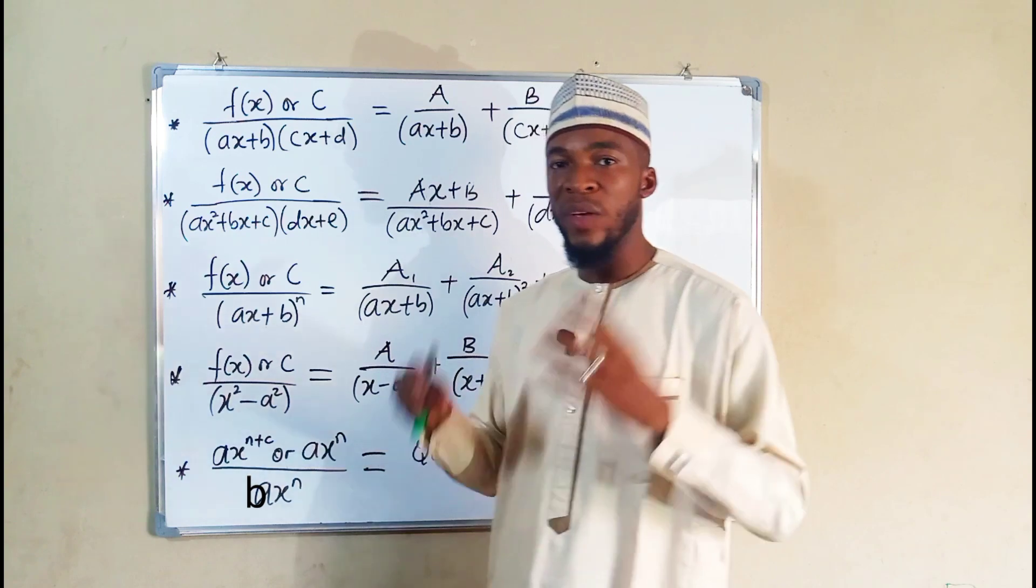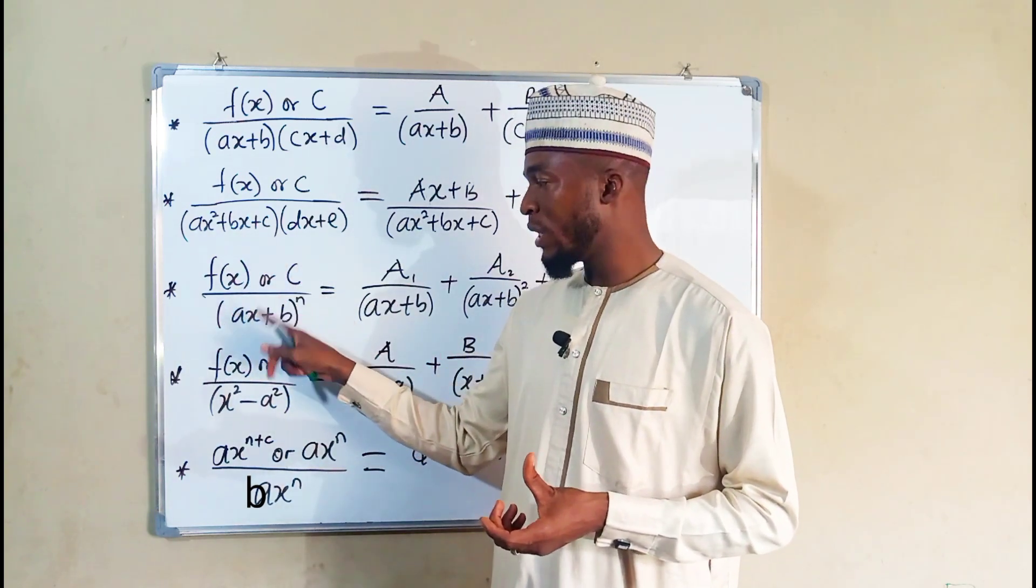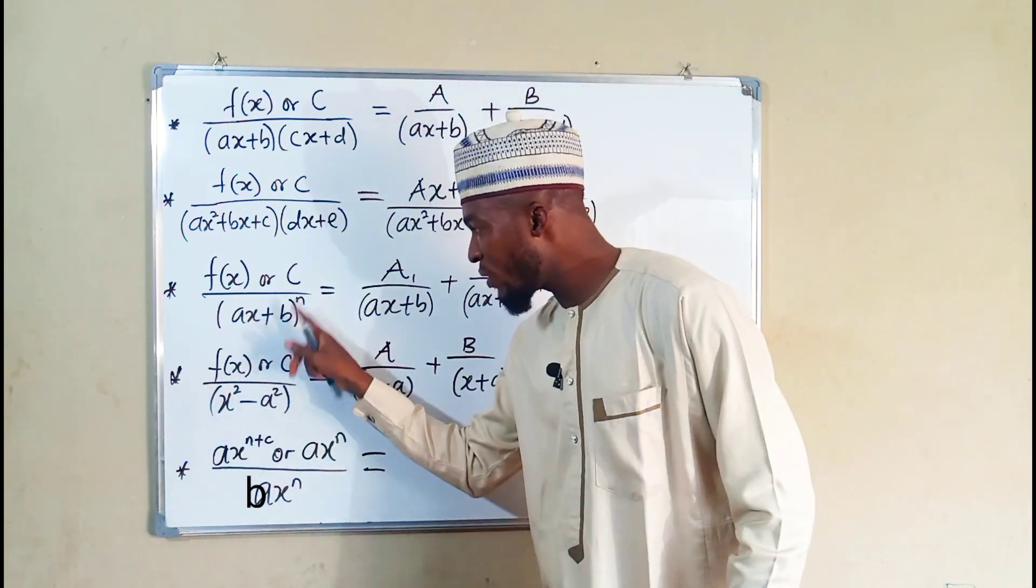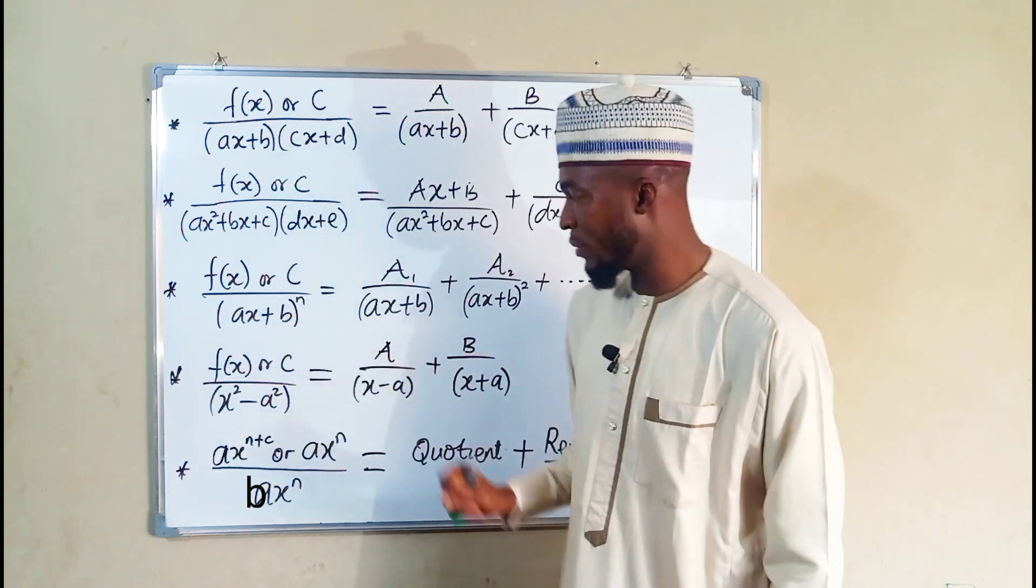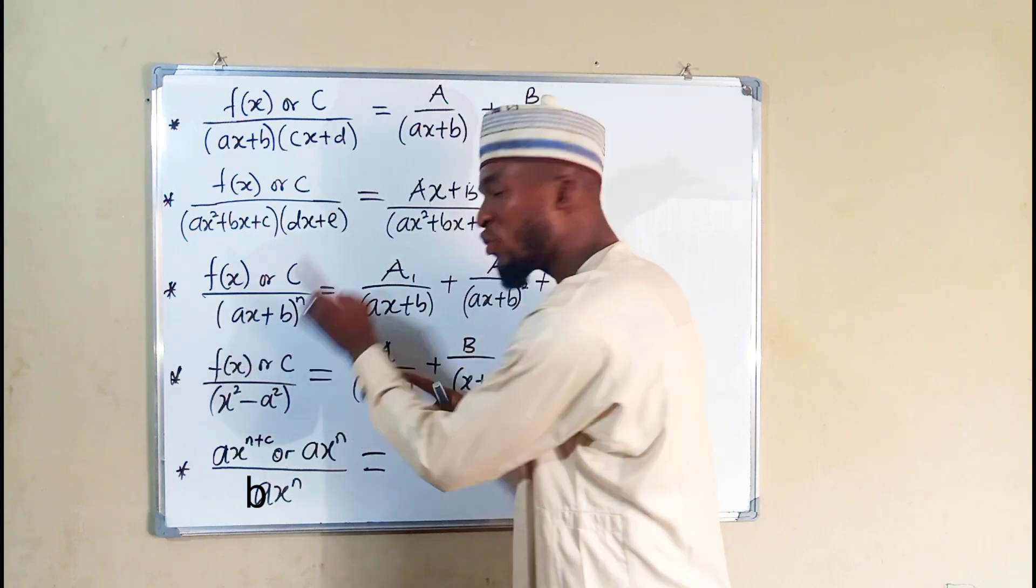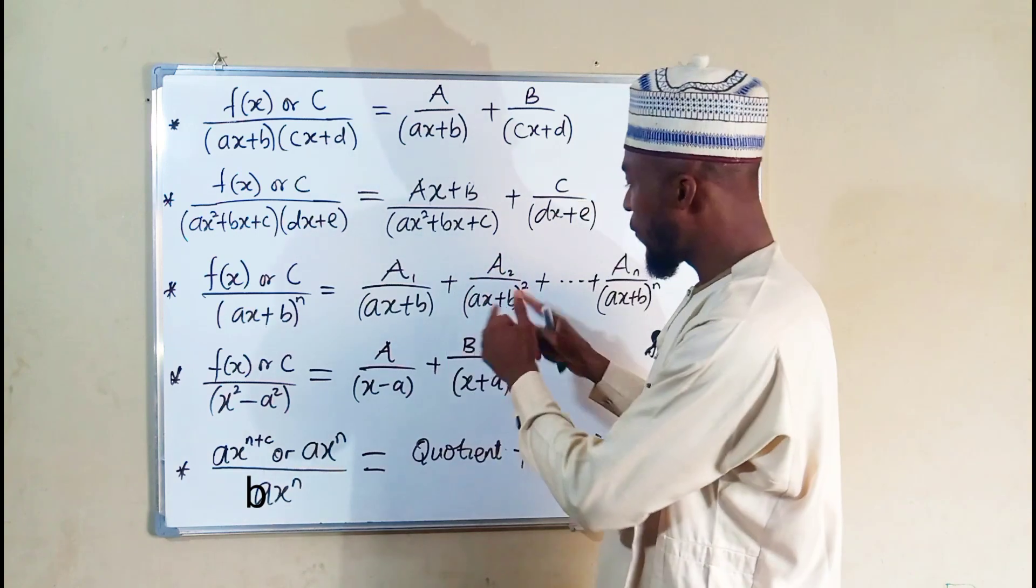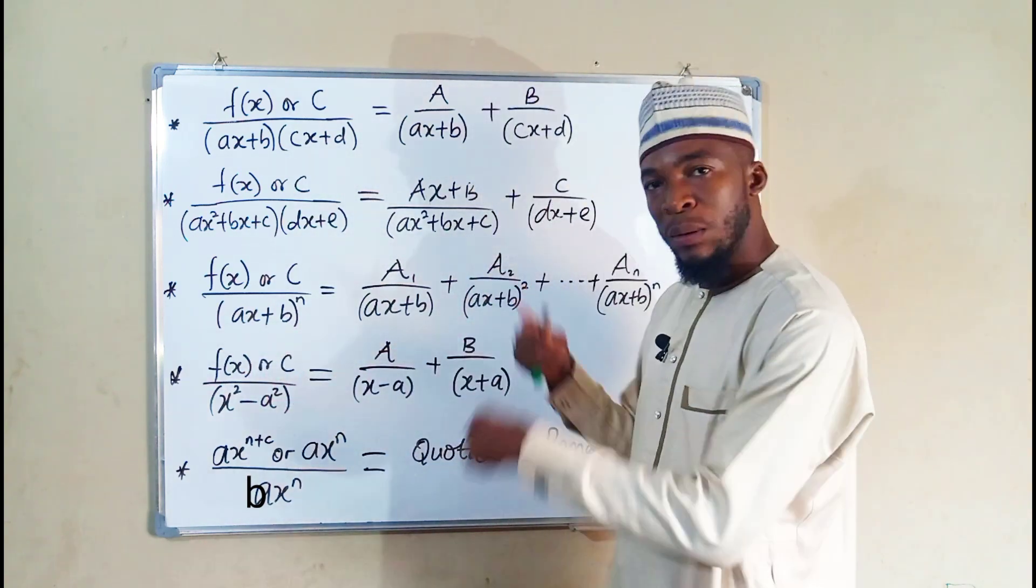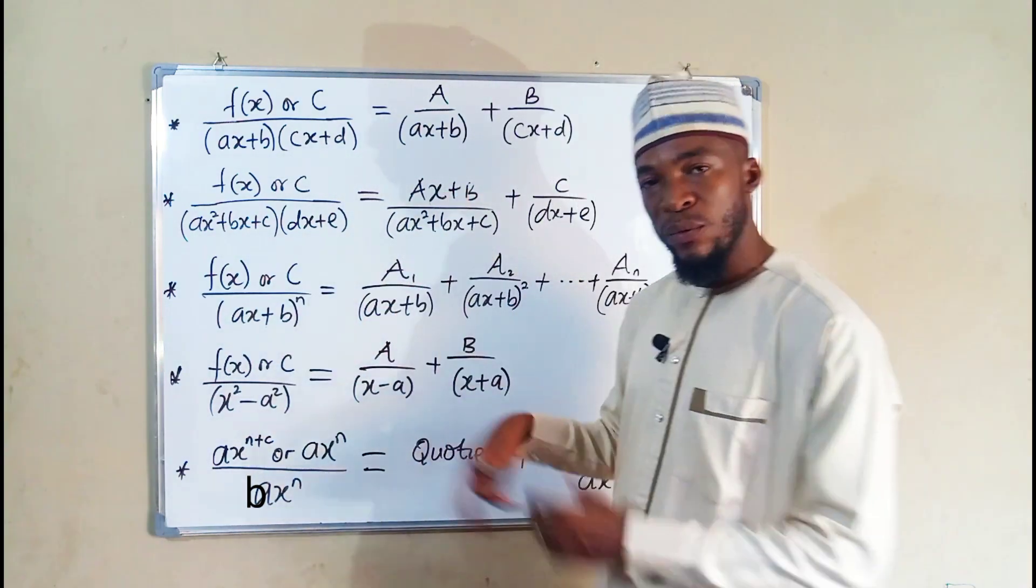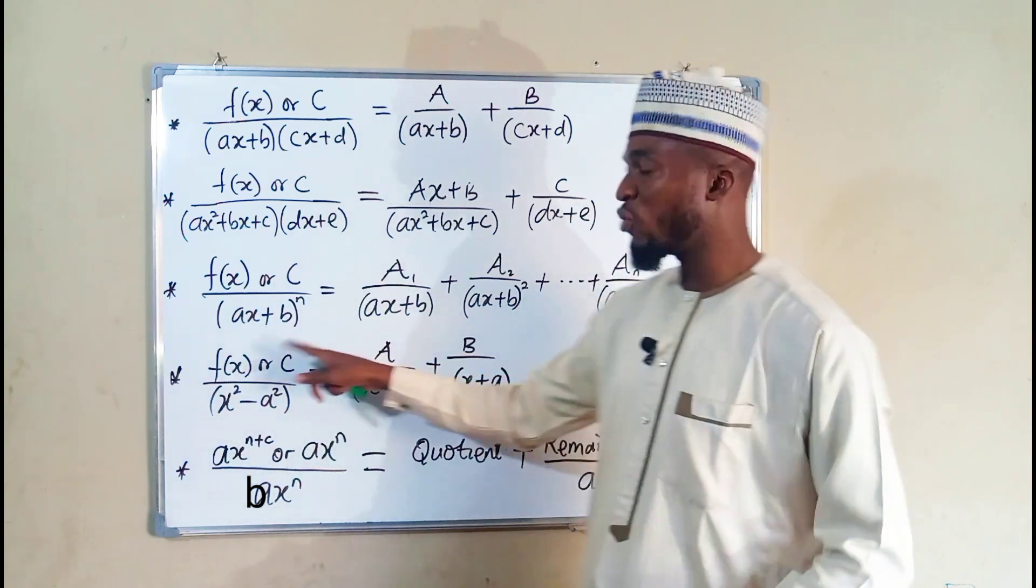Sometimes we may have a compound fraction in this form where we have a function or a constant to the top divided by a linear repeated factor. It is repeated because it is multiplied n times. So in this case, we have a constant to the top divided by that function to the first power, plus another constant to the top, divided by that function to the second power, plus another constant, plus that function to the third power. You keep adding after the last term, which is a constant divided by that function to the nth power.